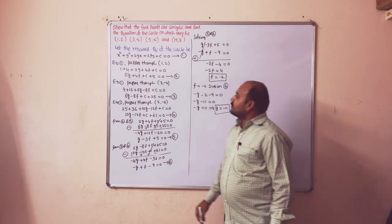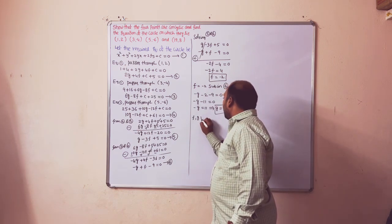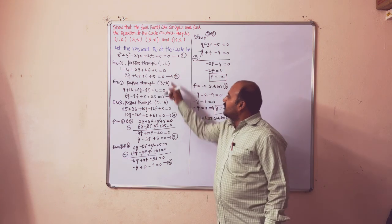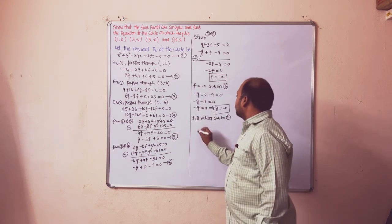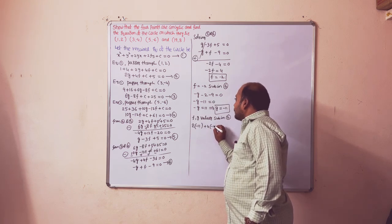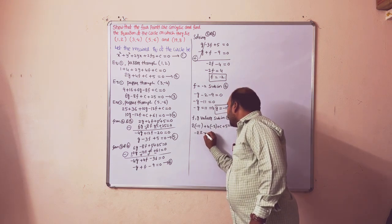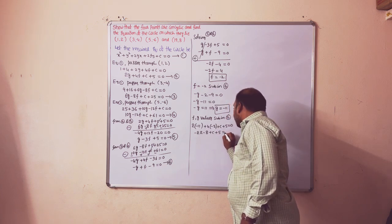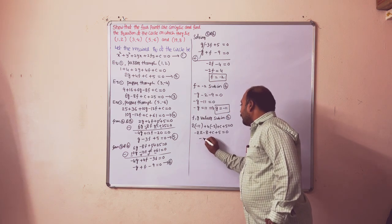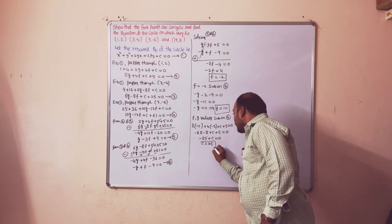Substituting the values of f and g into Equation 2 (the smallest equation) to find c: 2(-11) + 4(-2) + c + 5 = 0, giving -22 - 8 + c + 5 = 0, so -25 + c = 0, therefore c = 25.